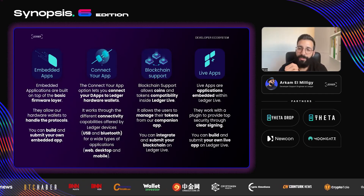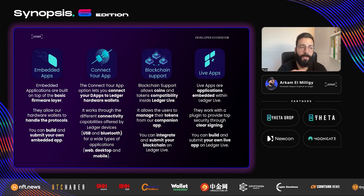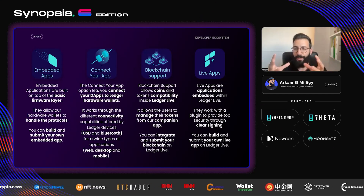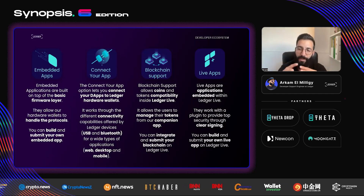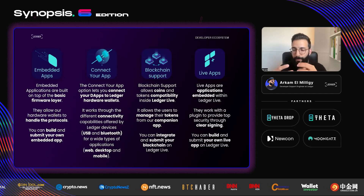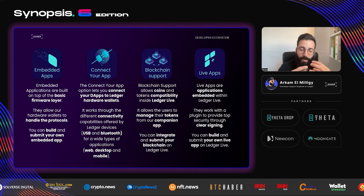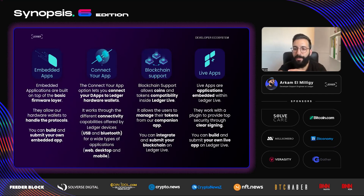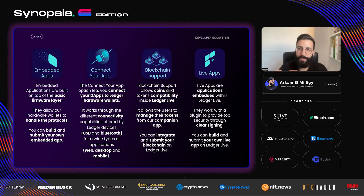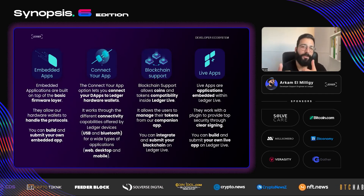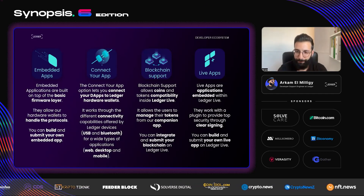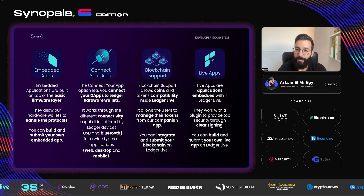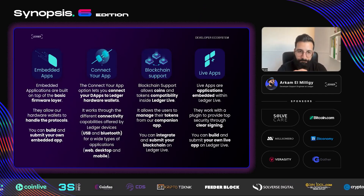Another layer of integration is the live apps. A live app could be a DApp or a non-DApp — it's an app directly embedded in Ledger Live, our companion app. It works with what we call a plugin, which is kind of an embedded app but lighter, mainly here to provide security through clear signing — to allow users to know what they are signing directly on their device. You can build the plugin yourself and submit it with the app you'd like to integrate.